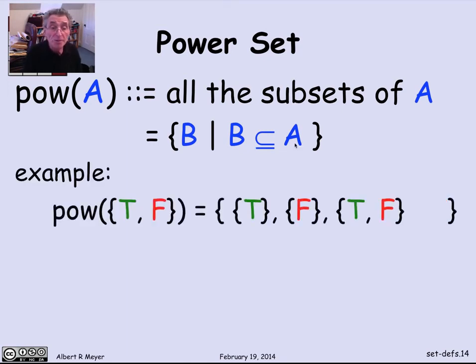An example would be, let's take the power set of the two Boolean values, true and false. So the power set of true and false of that set consisting of two elements is, well, what are some of its subsets? The set consisting of just true is a subset of true false. So is the set consisting of false. And so is the whole thing. It's a subset of itself. And one final element, the empty set, is a subset of the set of Boolean values, true and false.